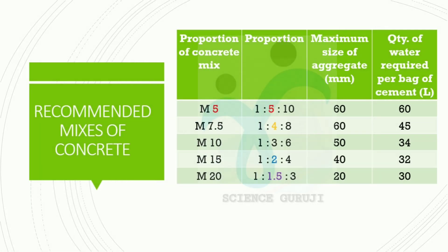These are the recommended mixes of concrete. The four columns are: proportion of concrete mix, proportion, maximum size of aggregate, and quantity of water required for a bag of cement. The concrete grades are M5 (1:5:10), M7.5 (1:4:8), M10 (1:3:6), M15 (1:2:4), and M20 (1:1.5:3).